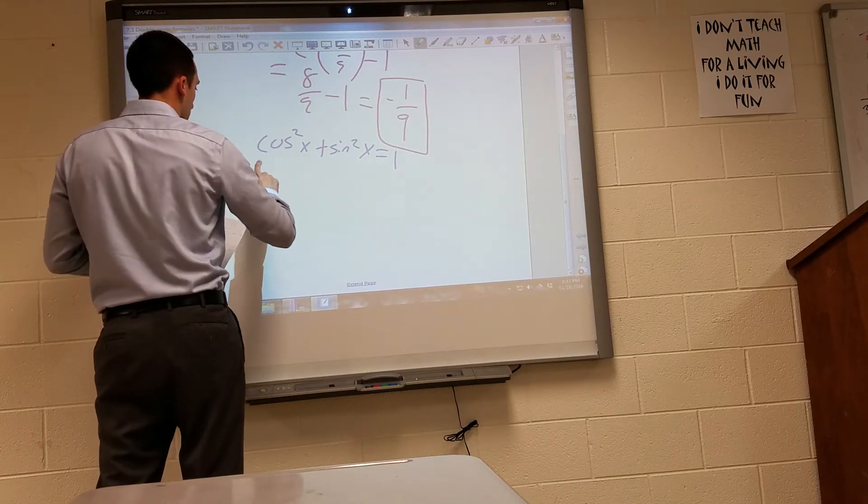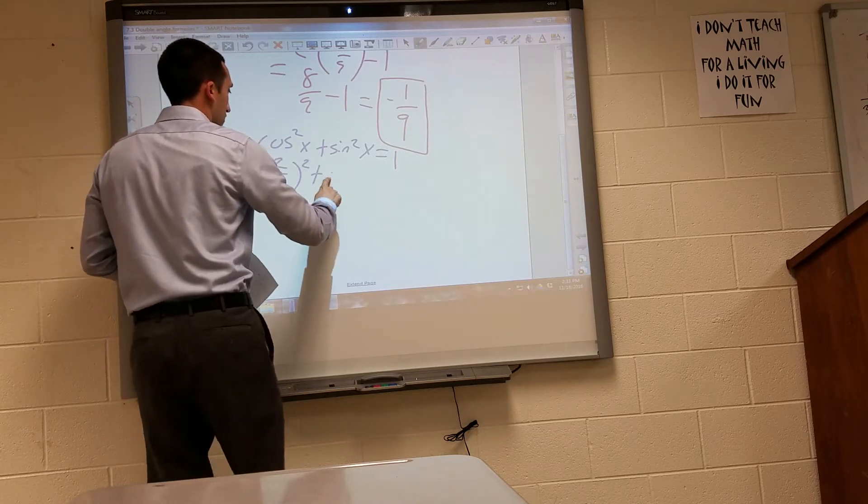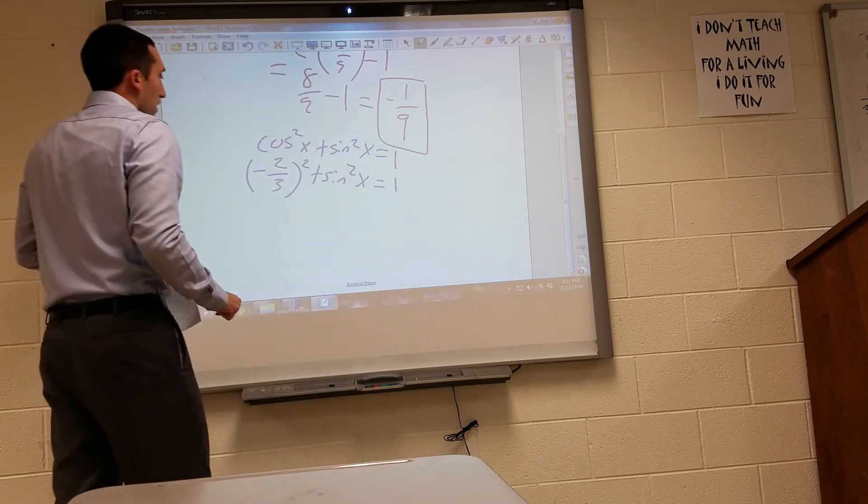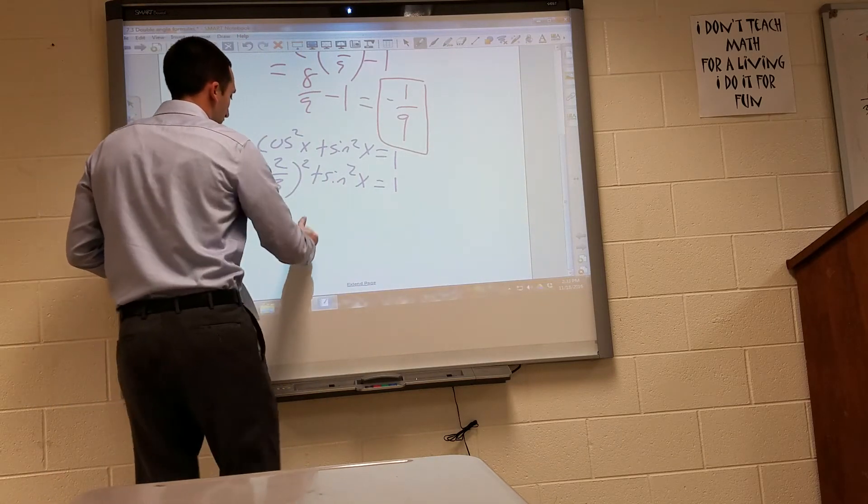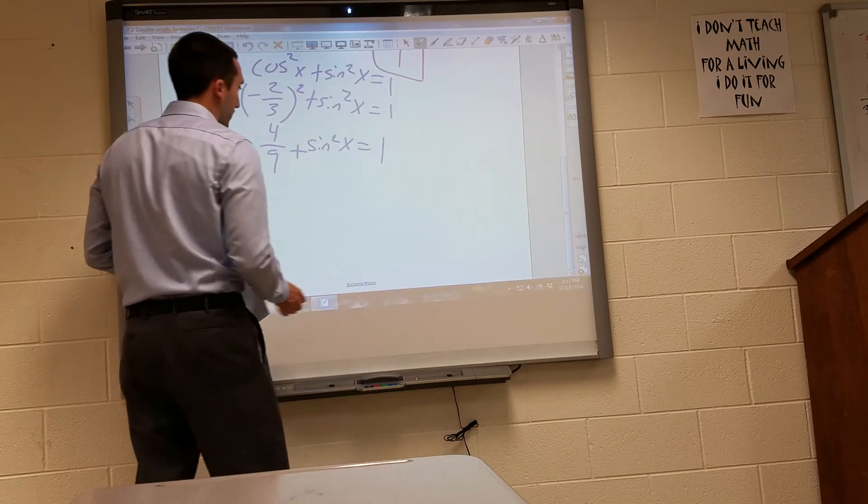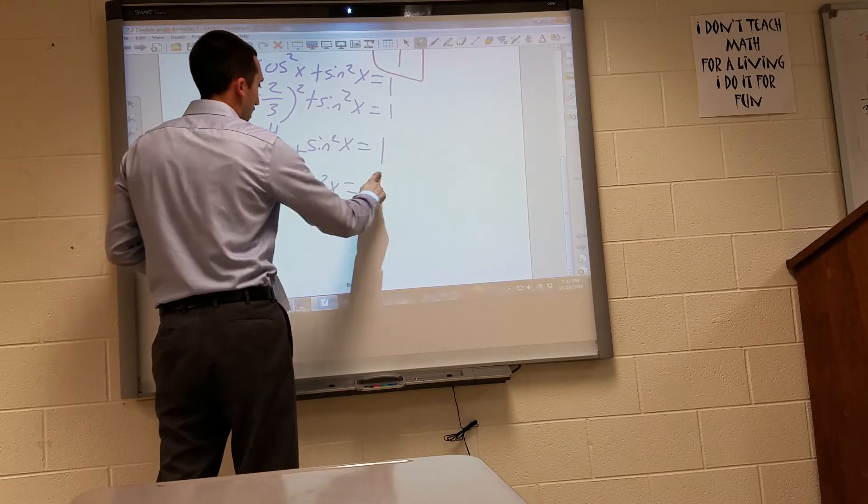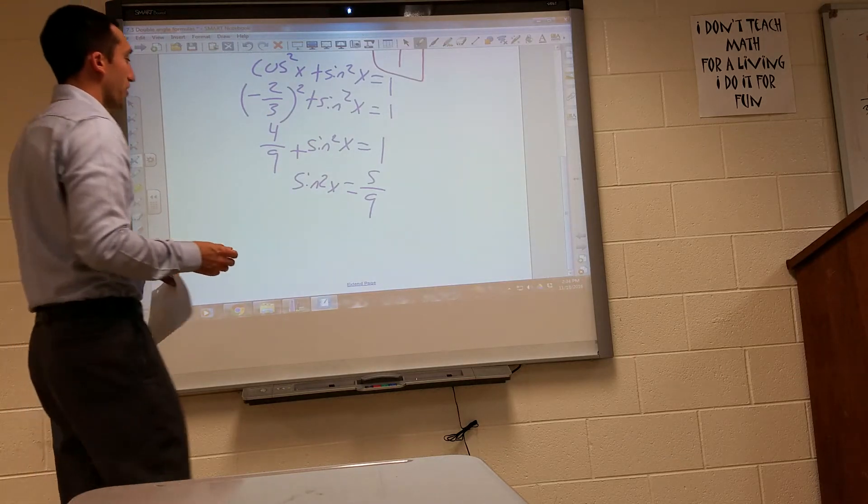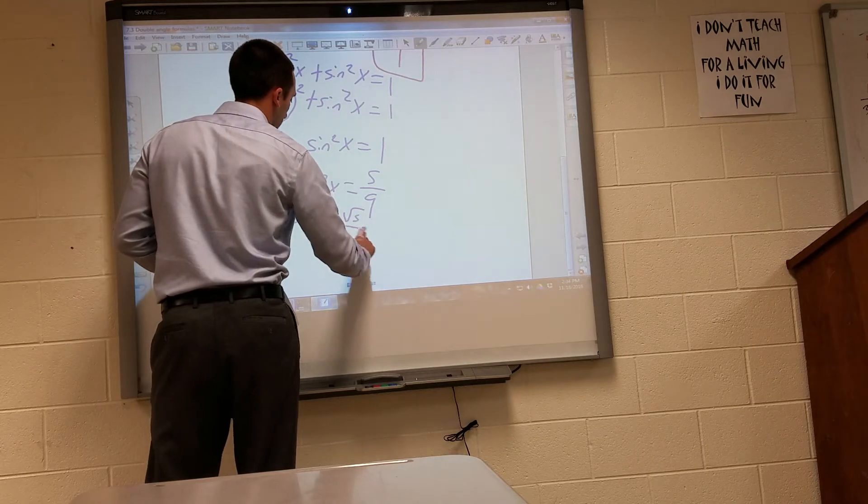Plug in for cosine squared. We know cosine to be negative two-thirds. And negative two-thirds squared, we found before, to be 4 ninths. Subtract 4 ninths from both sides, you get sine squared x equals 5 ninths. You do 9 ninths minus 4 ninths. And when you take the square root, you get sine of x equals radical 5 over 3.